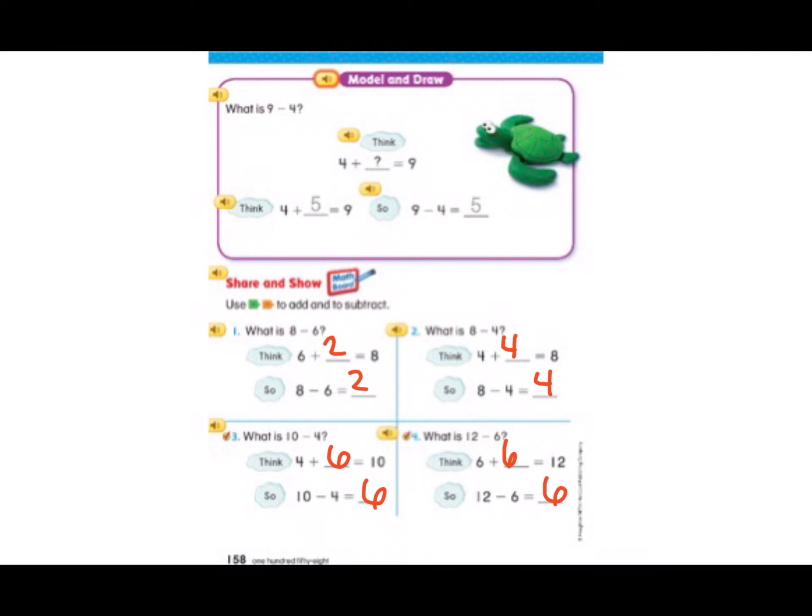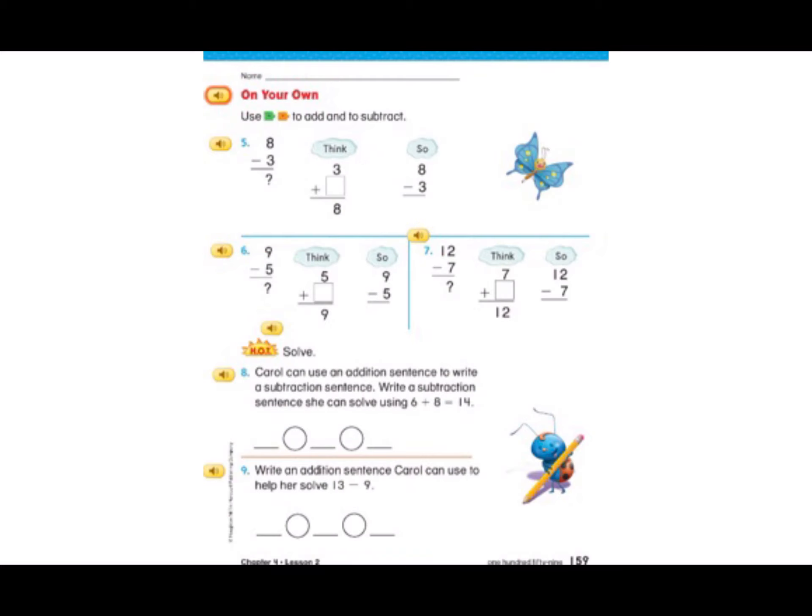Look at our next page. Number 5. 8 minus 3 equals? Think what number do I need to add to 3 to get 8? Let me count. I'm going to use cubes to count on. So 3, 4, 5, 6, 7, 8. So let's count how many cubes I drew. 1, 2, 3, 4, 5. So 3 plus 5 equals 8, which means 8 minus 3 equals 5.